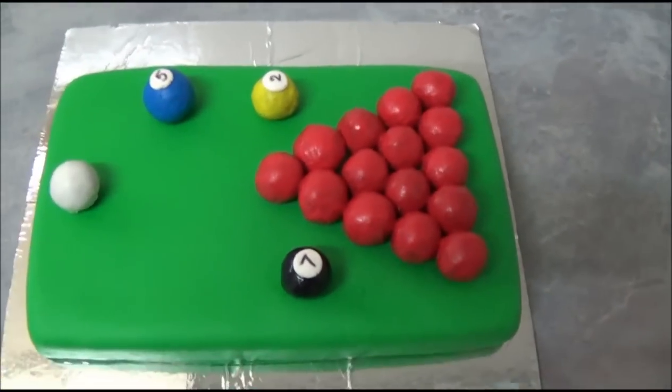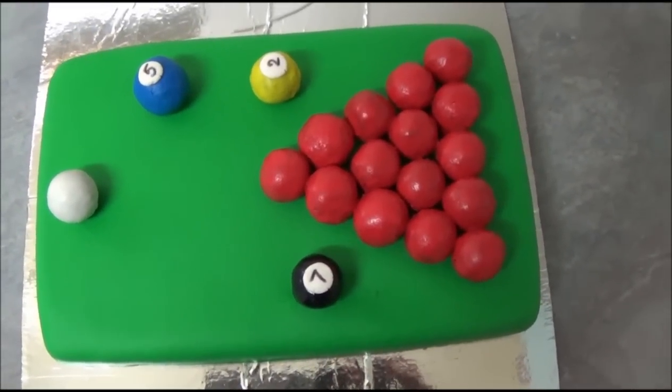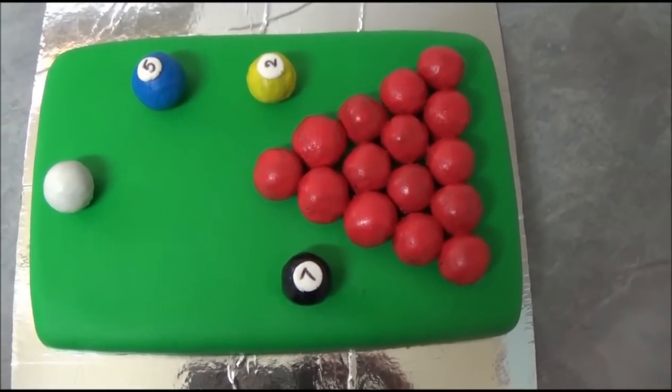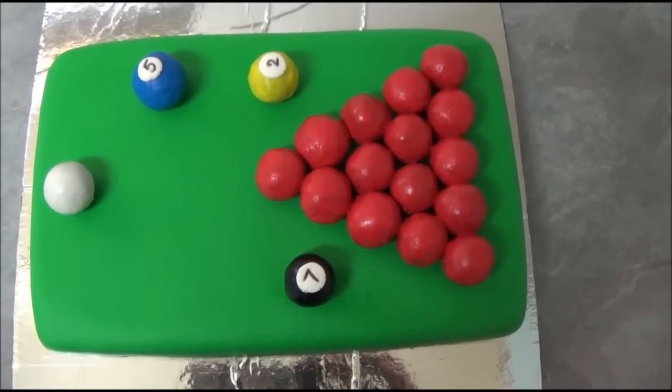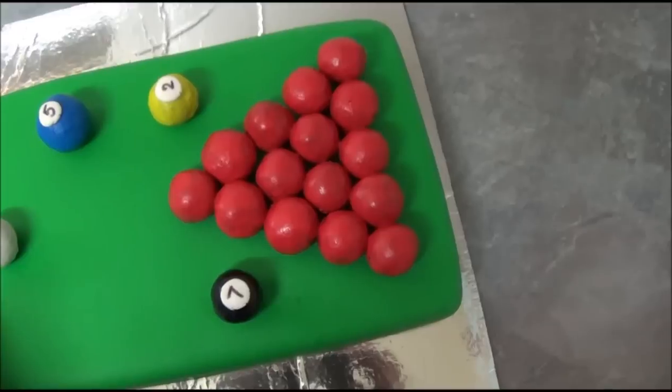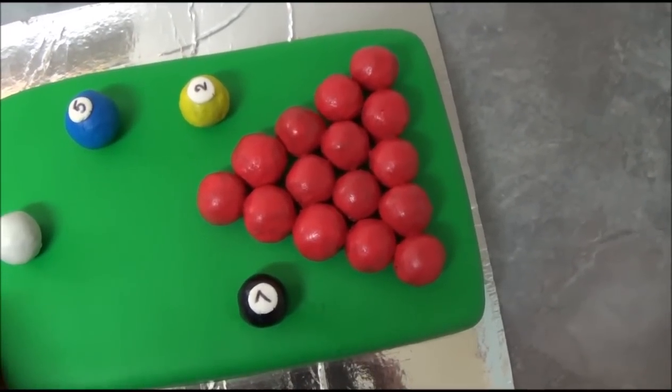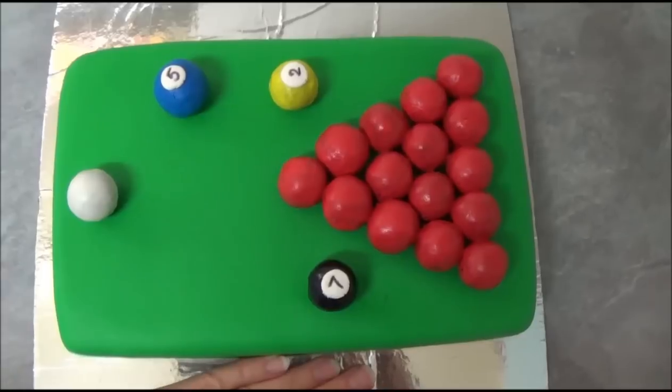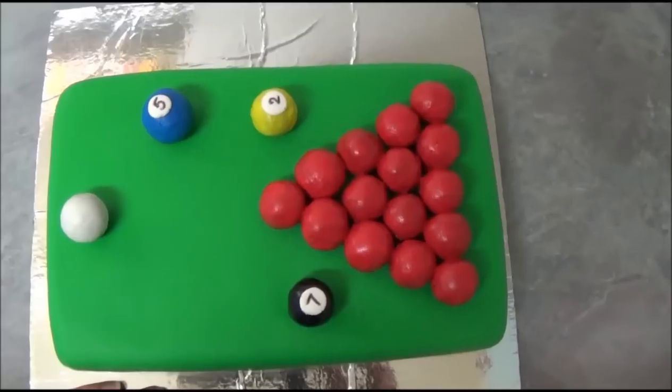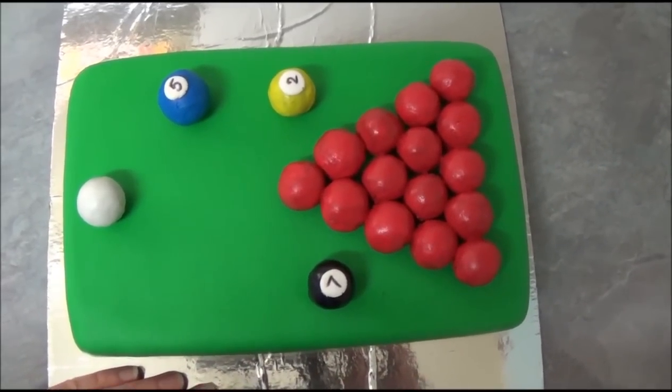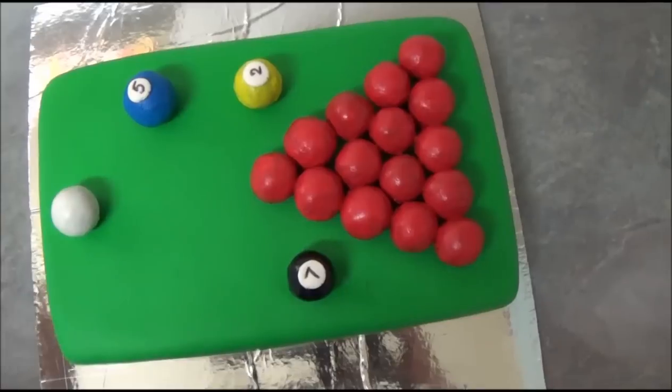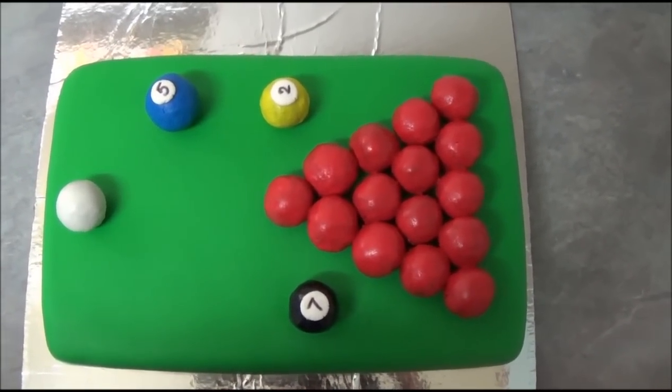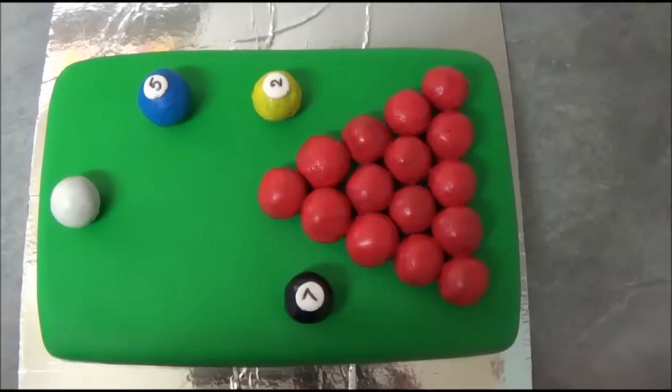As you can see now, this is our very, very simple snooker table cake. Also, if you like to add some details, you can actually use brown fondant or brown gel food coloring and color the sides as well if you like. It's all up to you basically. I hope you do like this simple creation of the snooker table and it's great if you really try to. Thank you very much for your time with me today. Everything will be in the description box. Until next time. Goodbye.